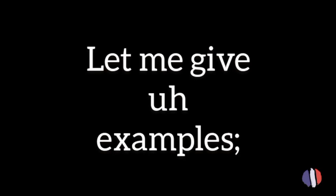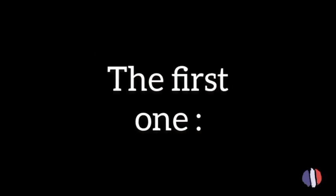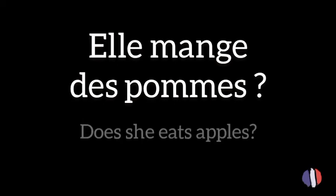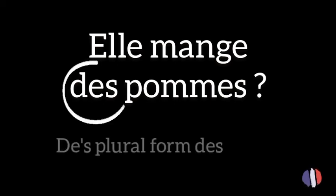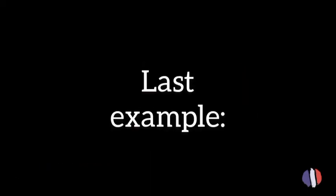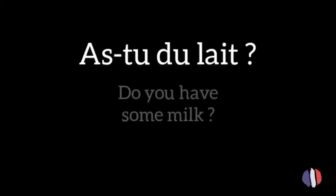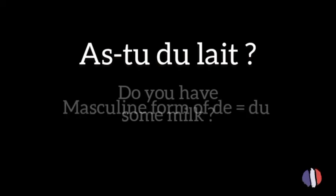Let me give you some examples. The first one: 'Elle mange des pommes?' which means 'Does she eat apples?' Here you can see the form de with the noun 'apple' is being used. To avoid repetition, we use en, so we would say: 'Oui, elle en mange.' Here en replaced 'des pommes,' which means 'apples.'